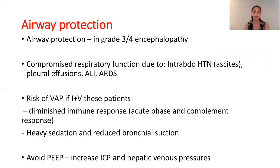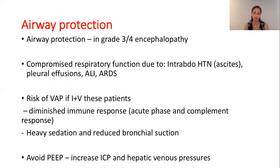Regarding the respiratory system, airway protection in grade 3 and 4 encephalopathy is crucial. Compromised respiratory function can occur due to intra-abdominal hypertension caused by ascites, pleural effusion, acute liver injury, and ARDS. There is a risk of ventilator-associated pneumonia in mechanically ventilated patients due to the diminished immune response caused by liver failure and reduced bronchial suction from heavy sedation. It is important to avoid high PEEP as it can increase intracerebral pressure and hepatic venous pressures.